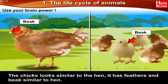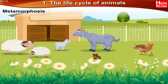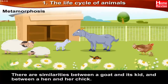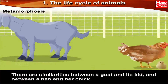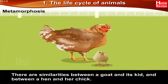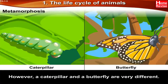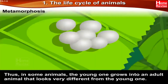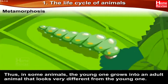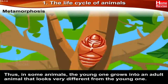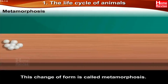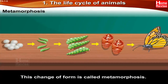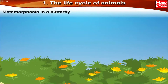There are similarities between a goat and its kid, and between a hen and her chick. However, a caterpillar and a butterfly are very different. Thus, in some animals the young one grows into an adult that looks very different from the young one. This change of form is called metamorphosis.